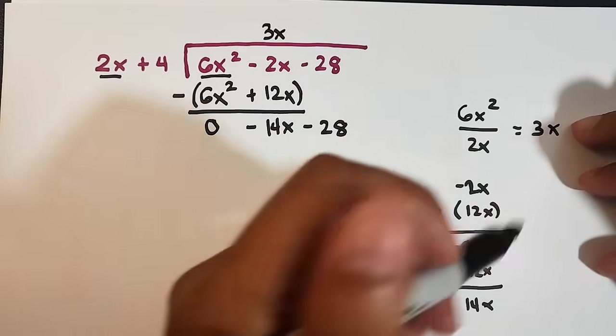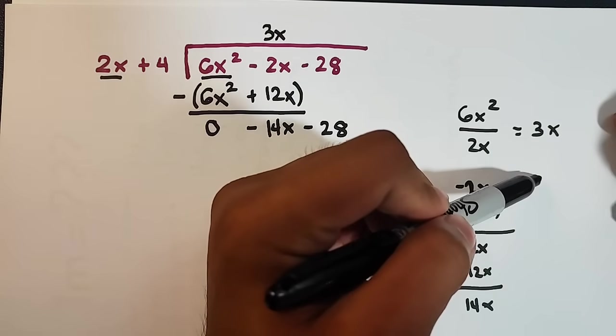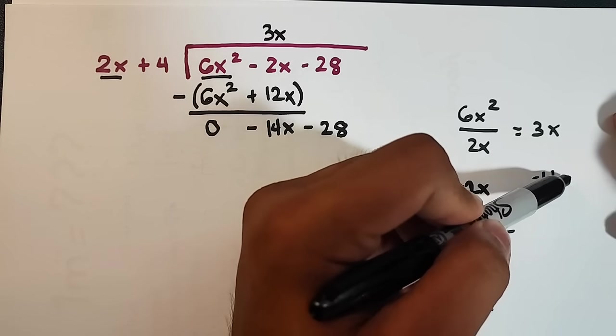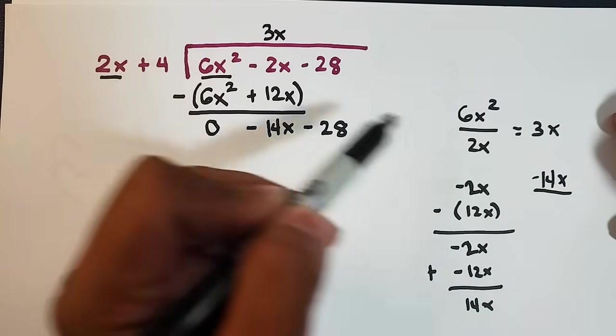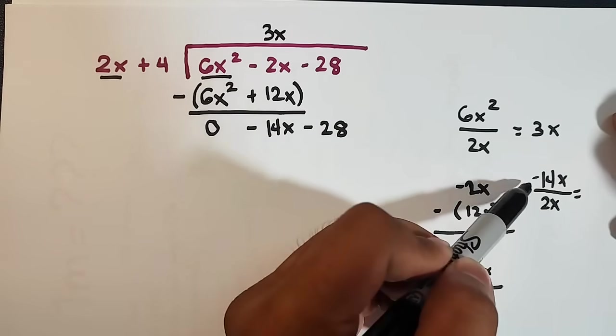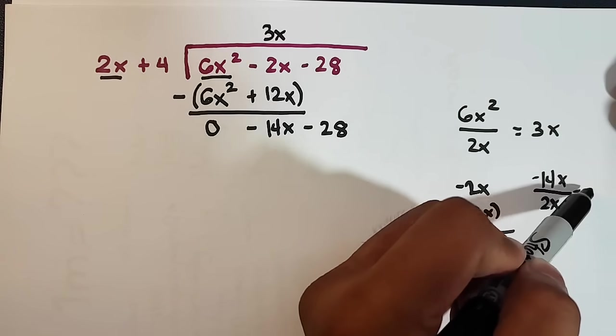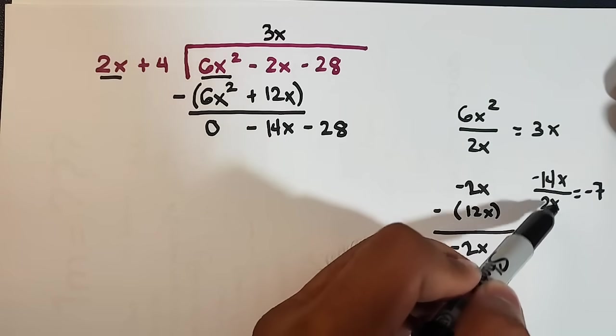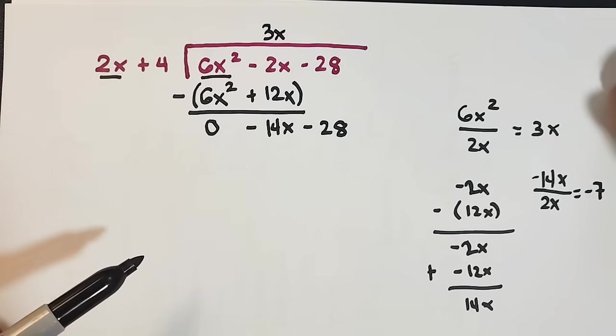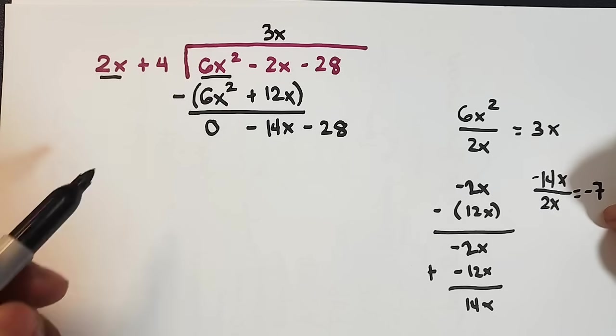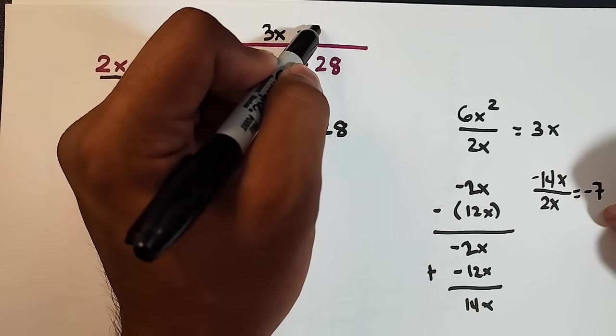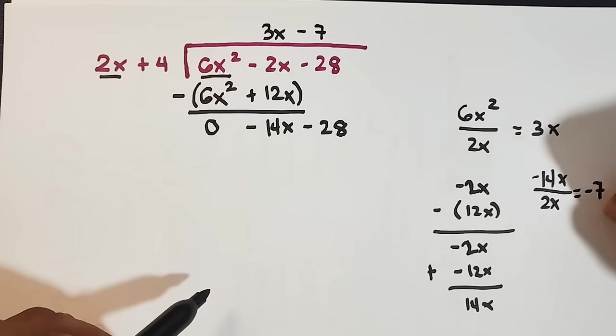So we have negative 14. I will use this part. Negative 14x divided by 2x. So negative 14 divided by 2 is negative 7. And then x over x is 1. So negative 7. So this will become minus 7.